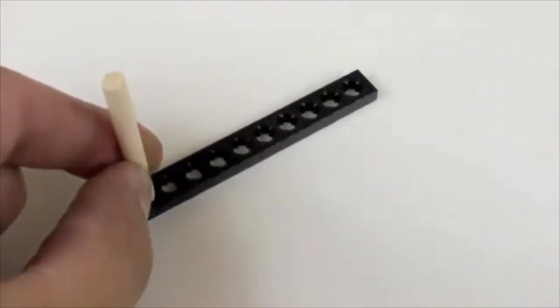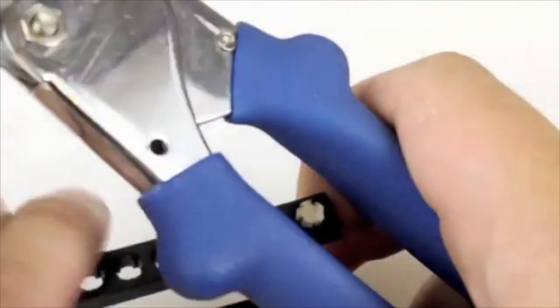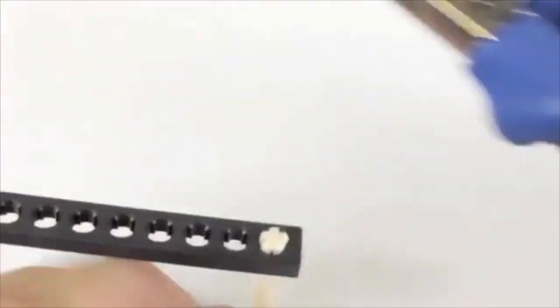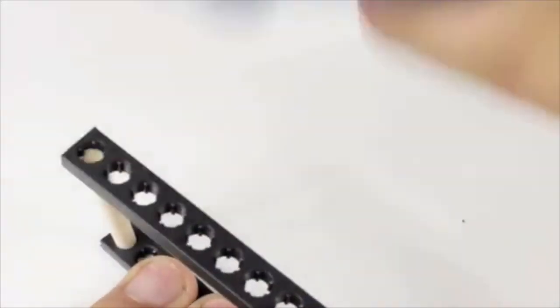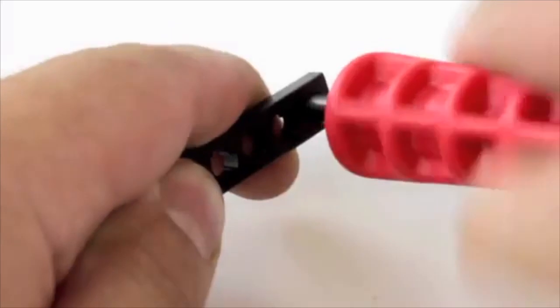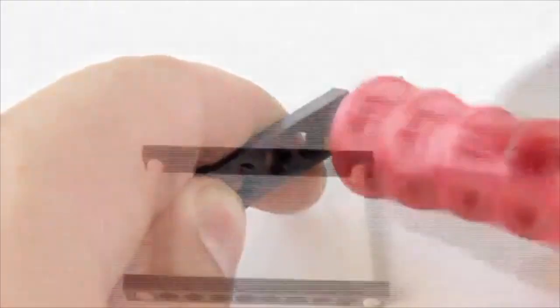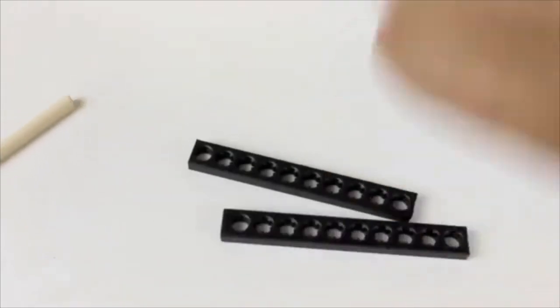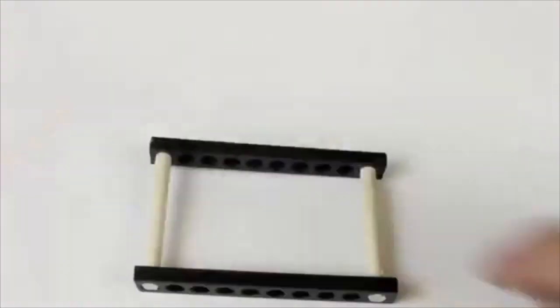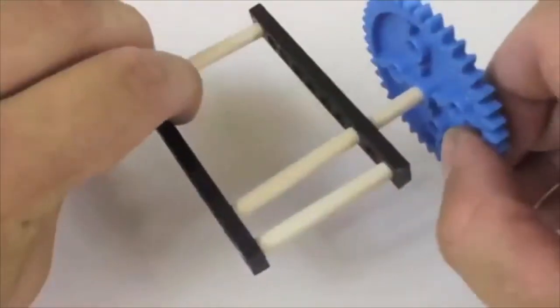Most of our TeacherGeek components come with holes that dowels just press into. Just twist the reamer back and forth to ream out a hole. Reaming out a hole will make it so it no longer holds a dowel. So don't ream out holes you want dowels to stay pressed into. Only ream out holes you want dowels to slide or rotate in.